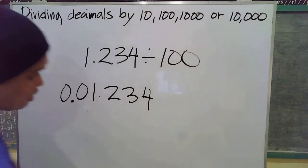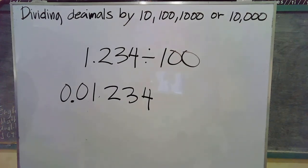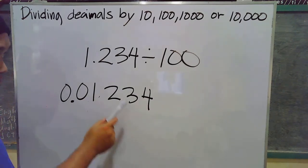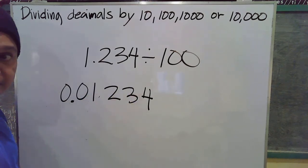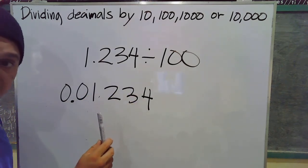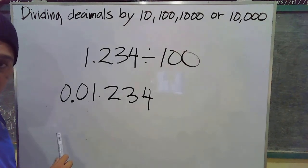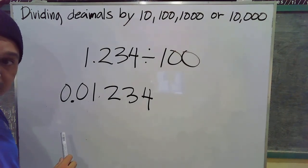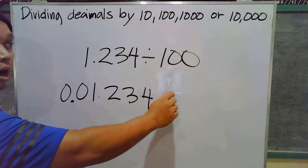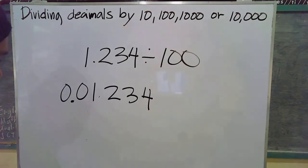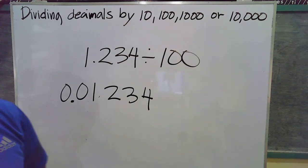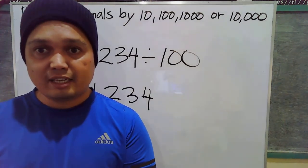That's how you divide decimals by 10, 100, 1,000, or 10,000. Just copy the dividend, then move the decimal point to the left depending on how many zeros the divisor has. Thank you for your time. See you next meeting. Bye-bye.